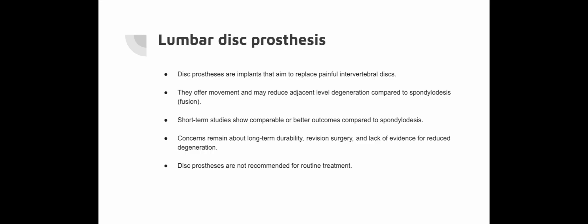Lumbar disc prosthesis was introduced in the 1990s to treat low back pain caused by intervertebral disc degeneration. It replaces the affected segment with a metal prosthesis and polyethylene core, aiming to preserve movement and potentially reduce long-term degeneration at adjacent levels — unlike spondylodesis, which fuses vertebrae. While initial studies show comparable or slightly better outcomes than spondylodesis within two years, long-term concerns arise due to risks of prosthesis collapse or loosening. Revision surgeries are challenging and associated with high morbidity, and the supposed advantage of reduced adjacent-level degeneration remains unproven.